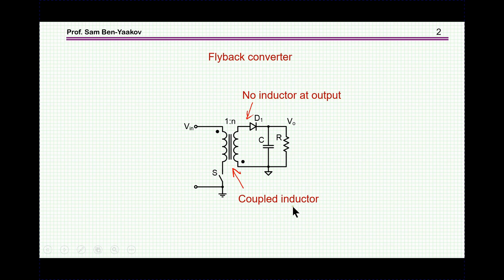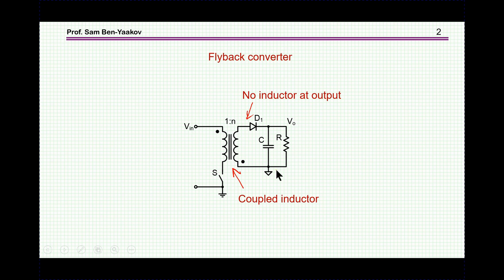We have a coupled inductor that looks like a transformer, but it's really an inductor because it's storing energy. There is a switch, and when the switch is on, energy is pumped into the core while this diode is in the off state. While when the switch is open — that is non-conducting — then current will flow through the diode to the output.